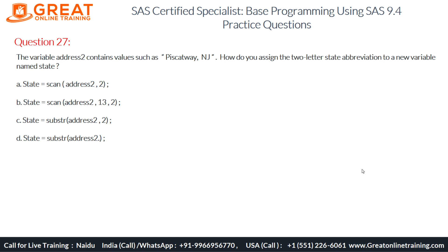Question number 27: the variable address2 contains values such as 'Piscataway, NJ'. How do you assign the two-letter state abbreviation to a new variable named state? The question asks us to extract the two-letter state abbreviation from the address2 variable into a new variable called state — in this case, extracting 'NJ' from 'Piscataway, NJ'.